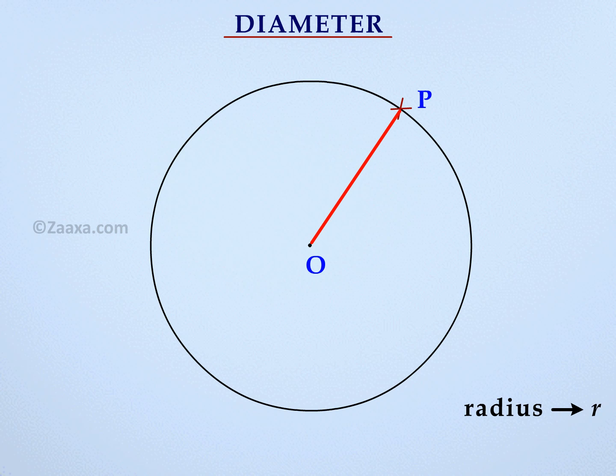Let us now extend PO to cut the circle at another point, Q. We say that PQ is a diameter of the circle. Note that the diameter is a straight line which divides the circle into two equal halves and passes through its center. We usually denote the diameter by D.